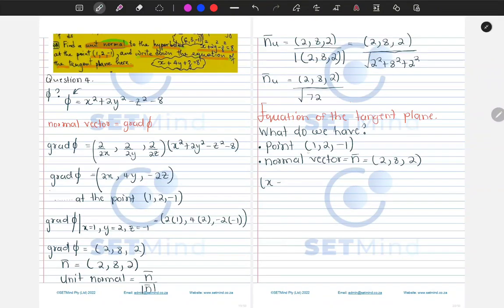So it will be (x - 1, y - 2, z + 1) dotted with the normal vector, and we equate that to zero. Here x minus the x coordinate of the point which is 1, y minus the y coordinate which is 2, z minus the z coordinate which is minus 1, so that will be plus 1.